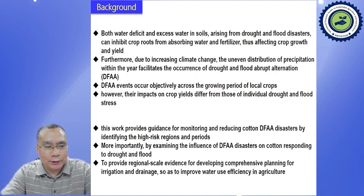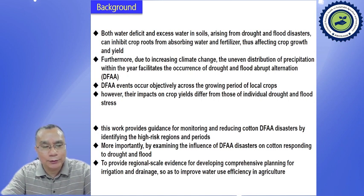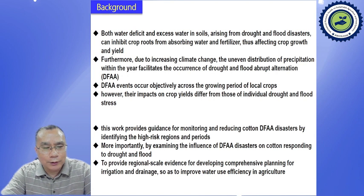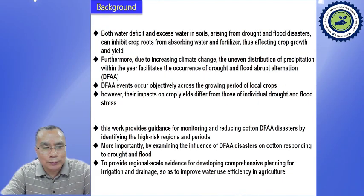DFAA events occur objectively across the growing period of local crops. However, the impacts on crop yields differ from the roles of individual drought and flood stress. That means, what is the influence of DFAA on crop yields? At present, we don't know — whether it is a greater, more serious, or lighter influence on crop yields. It needs to be studied.